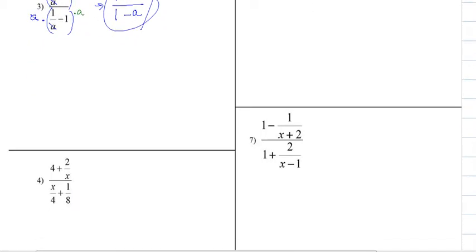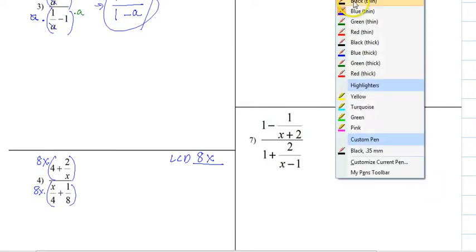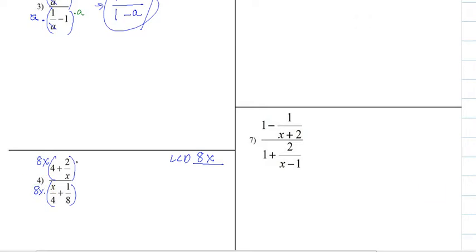Just try one more. We have an LCD of, we have 4 and 8, so that would be 8, and then also an X. So our LCD is 8X. You put a parenthesis top, parenthesis bottom, and you write 8X. You also have to multiply the bottom by 8X. So we put an 8X over here as well.